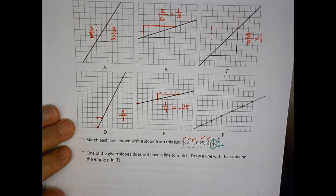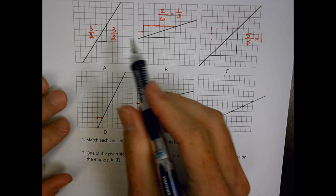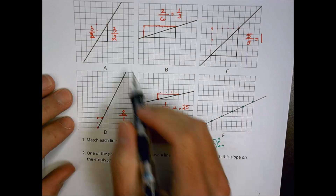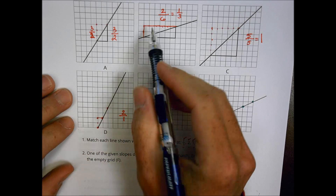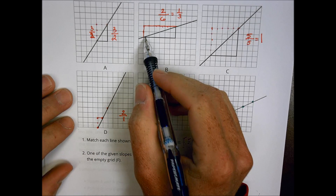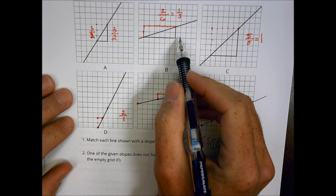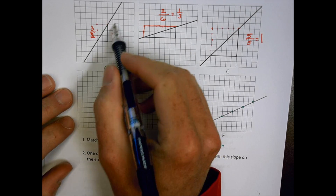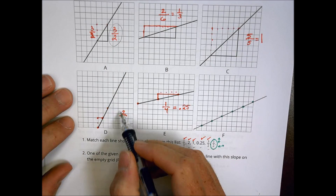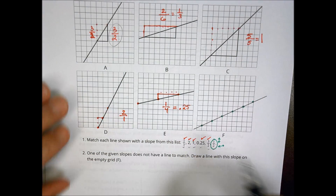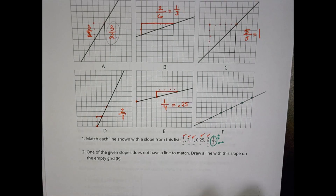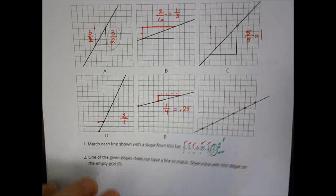So we're just taking a look at how slope works. It's a quotient between the vertical and the horizontal — vertical over horizontal, again and again, is how we figure out what a slope is going to be.